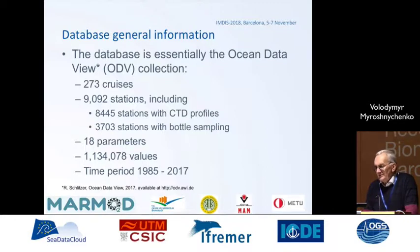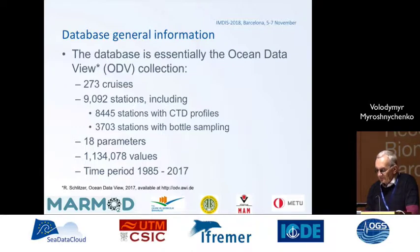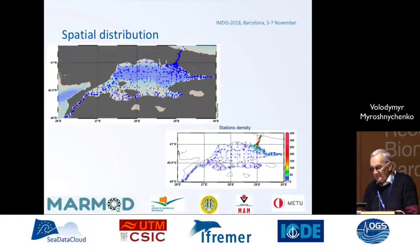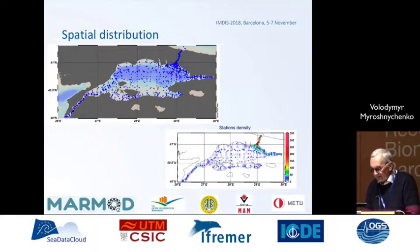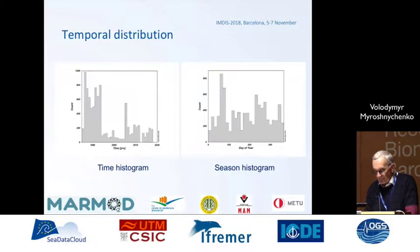The database is essentially an Ocean Data View collection containing data from 273 cruises, more than 9,000 stations, 18 parameters, and more than 1 million values for the time period from 1985 to 2017. The spatial distribution shows that coverage is irregular: the most intensive measurements were done in the Bosphorus area, while other parts of the Marmara Sea are covered irregularly. The temporal distribution also shows that the most intensive measurements were done in the Bosphorus area from 1985 to 1995, after which research was not as intensive.